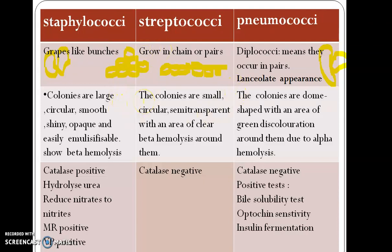Now let's talk about culture characteristics. Because we are doing a comparison, I have written about blood agar. Staphylococcus colonies are large, circular, smooth, shiny, opaque, and easily emulsifiable. The most important point is that they show beta hemolysis. Streptococcus also shows beta hemolysis, whereas Streptococcus pneumoniae shows alpha hemolysis. Beta hemolysis is complete hemolysis of red blood cells. Alpha hemolysis is partial hemolysis — these organisms produce a green discoloration on blood agar.